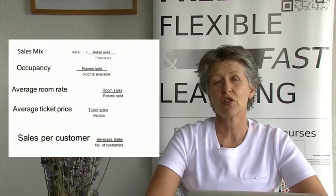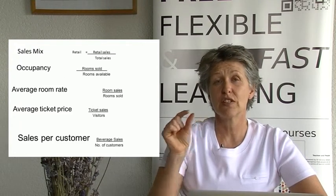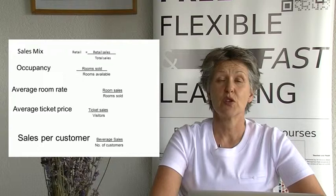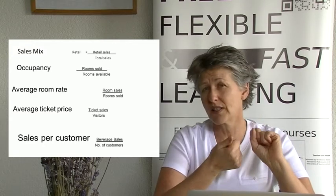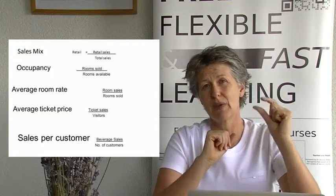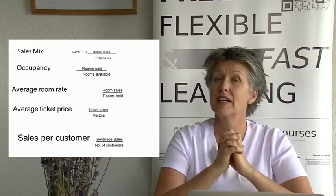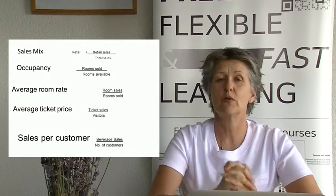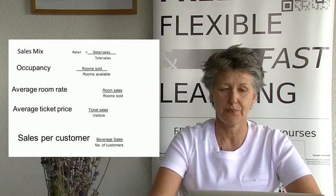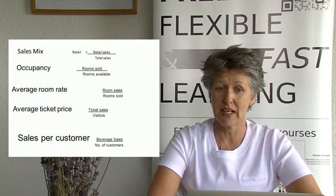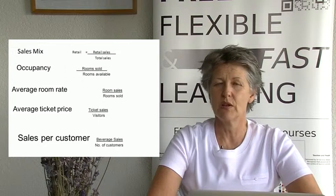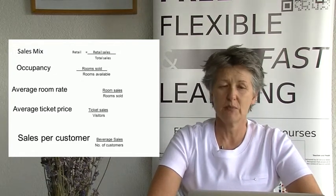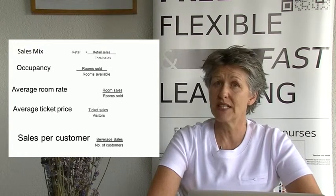The first calculation you should be able to do is evaluating the sales mix — how much of total sales came from each sales area. In hotels we might have room sales, food sales, beverage sales, retail, and spa sales. We take each department's sales divided by total global sales, times 100, to get the sales mix percentage. The second calculation is occupancy: rooms sold divided by rooms available, times 100 to get a percentage. In a restaurant it might be seats sold divided by seats available.